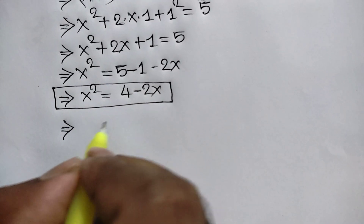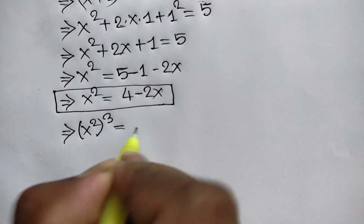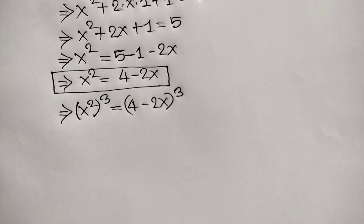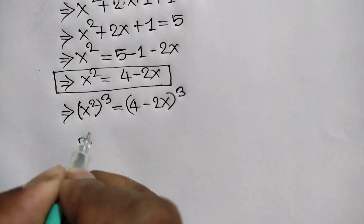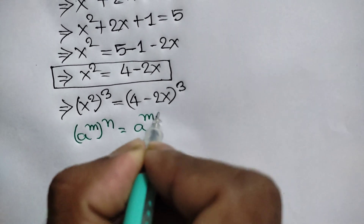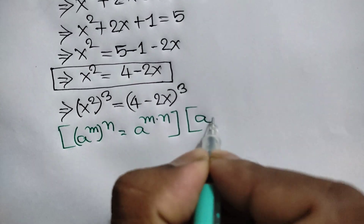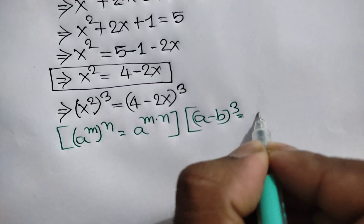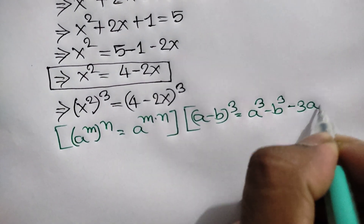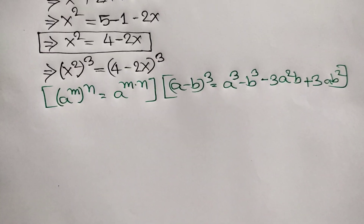Now taking cube on both sides, we can write x squared whole cube is equal to 4 minus 2x whole cube. We know the exponent rule: a to the power m whole to the power n equals a to the power m times n. And the algebraic formula: a minus b whole cube equals a cubed minus b cubed minus 3a squared b plus 3ab squared.